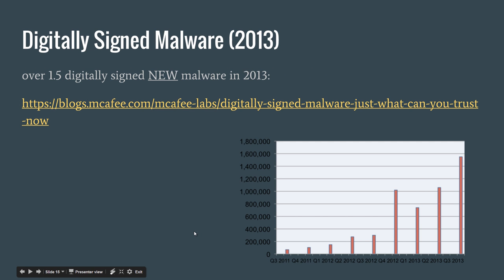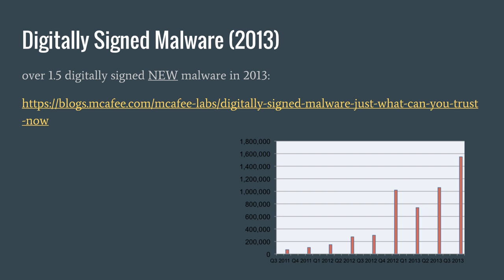In 2013, over 1.5 million digitally signed new items of malware were discovered. You would assume that requiring a valid trusted digital signature would prevent most malware, but this was found to be false — as discussed in the certificate lectures, certificate authorities do not actually do their job in verifying who is getting what signatures. Two separate teams of researchers were able to get root signing certs for various orgs, enabling this style of attack.